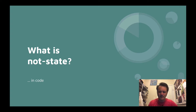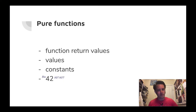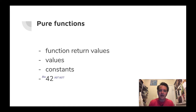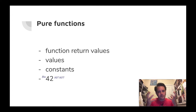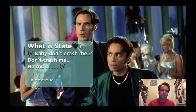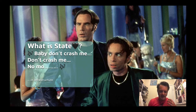What is not state? If we know what state is, what is not state? Well, not state would be function return values - whatever that expression returns, that's not state, it's a value. Things like constants - they don't change. Not an array in JavaScript where you can push to a constant, but things like 42. You're not going to change what 42 means. So 42 is constant, it never changes, it's not stateful. It always will be 42.